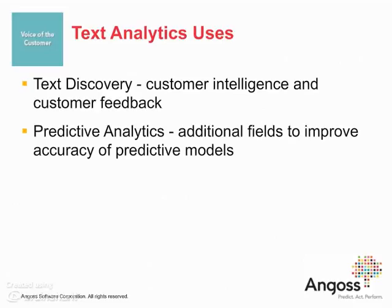In order to merge unstructured data with existing structured data for predictive modeling, you will need to identify the source of the text to link it with other data. This is easy with call center notes, CRM data, and other internal sources where you know which customer said what. It can be more difficult with external data from social media where you can't tie data to a particularly identified customer. In the case where you can't link the data, there is still valuable insight in the results obtained from text discovery alone.